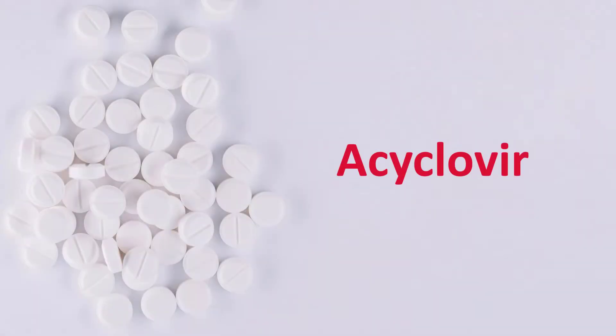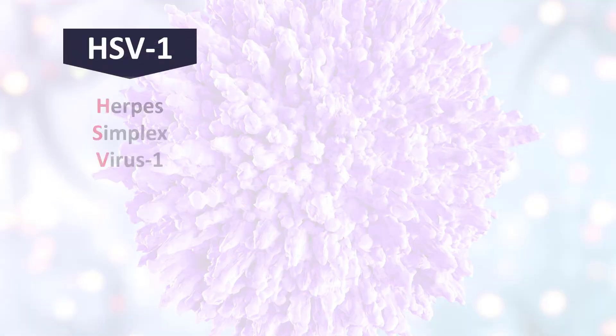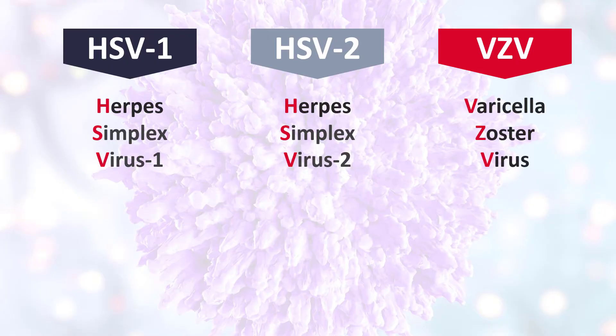There are only a few key points you really need to understand about acyclovir, and the one that is easiest to mess up is the dosing, so let's go through it. Acyclovir is an antiviral drug that we use to treat infections caused by herpes viruses — herpes simplex virus 1 and 2, and varicella zoster, the cause of chicken pox and shingles. Against other herpes viruses it's not that effective.